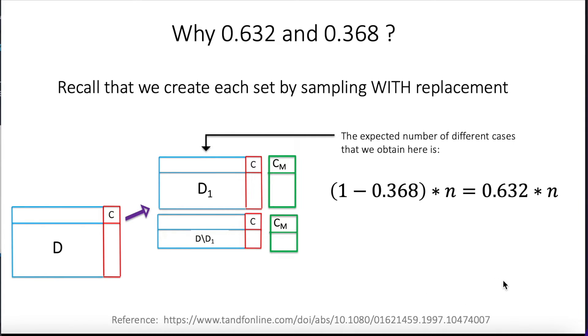And the authors of this method published this paper that is referenced down here in the link, and they recommend these two numbers to actually weight the calculation of the final accuracy of the whole set. So here we can see that the expected number of different cases is roughly two-thirds of the whole database. So this is why sometimes you hear that in general, when you make bootstrapped samples, you roughly get two-thirds of the data selected, and one-third is out of the bag. Recall that the size of D1 is n, is exactly the same size of D, because we repeat this procedure n times.